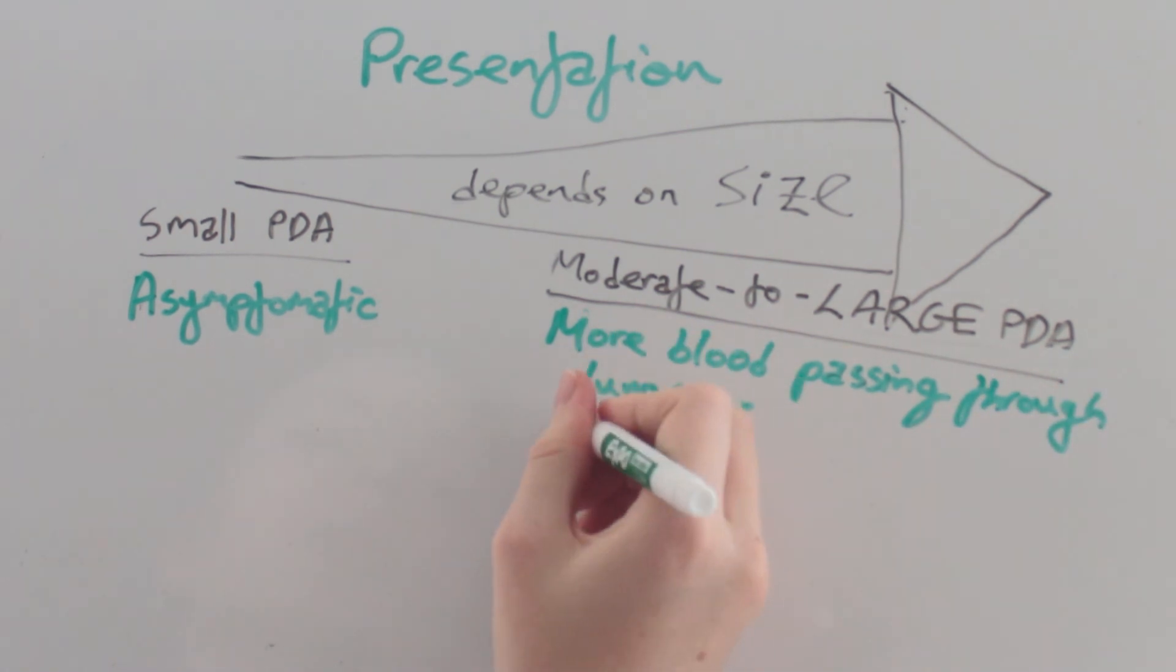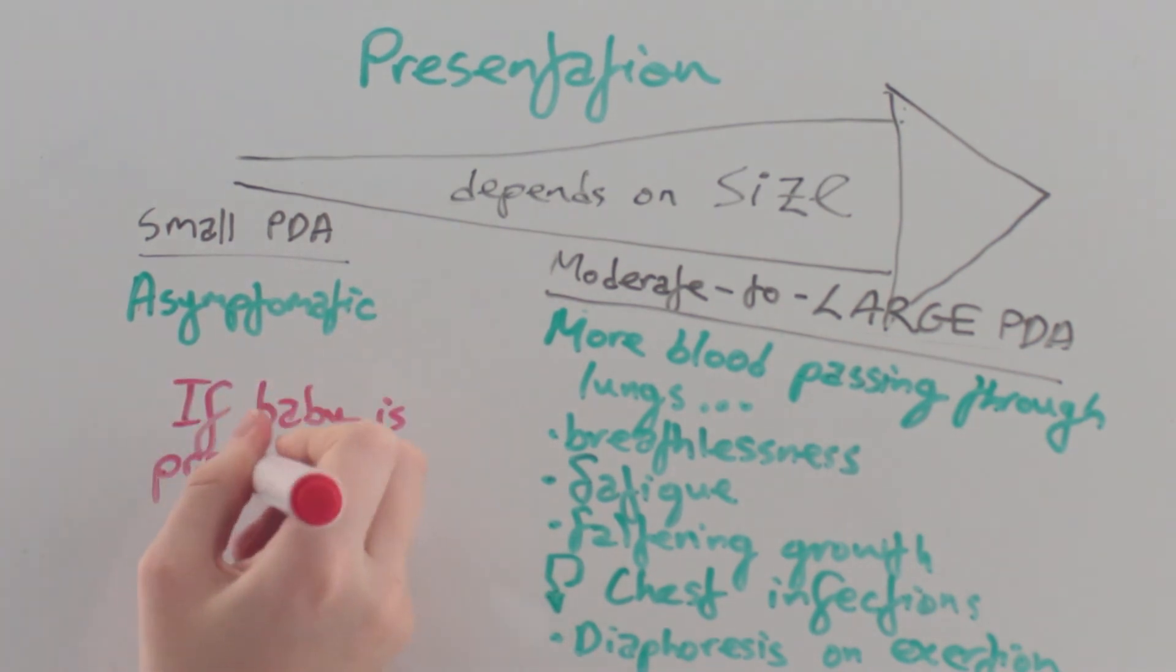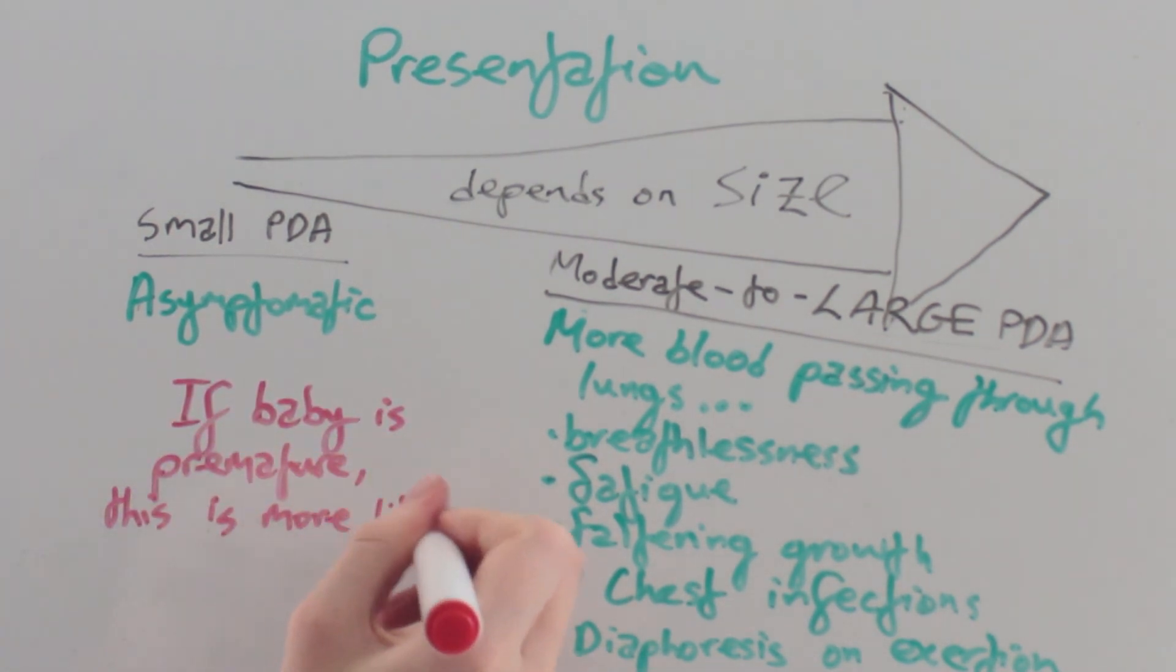So it can present with breathlessness, fatigue, faltering growth, recurrent chest infections, and diaphoresis on exertion. If the baby is premature, the increased blood flow is more likely to cause permanent damage to the lungs.